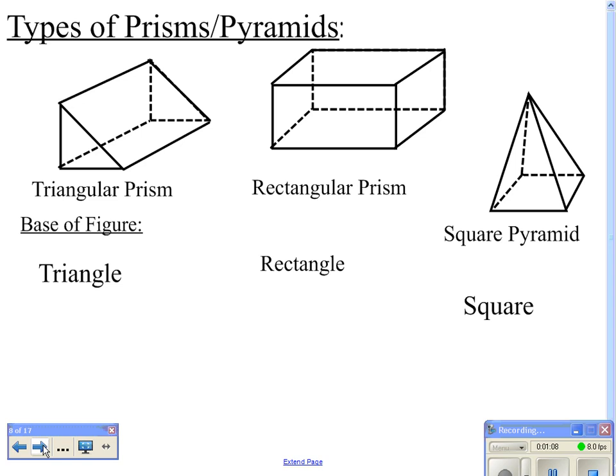These are examples of some prisms and a pyramid. Prisms have two parallel bases. We name prisms by their bases, which is why this is a triangular prism, since the bases are triangles, and a rectangular prism, since the bases are rectangles. Similarly, we name pyramids by their bases, and that's why this is a square pyramid, since the base is a square.